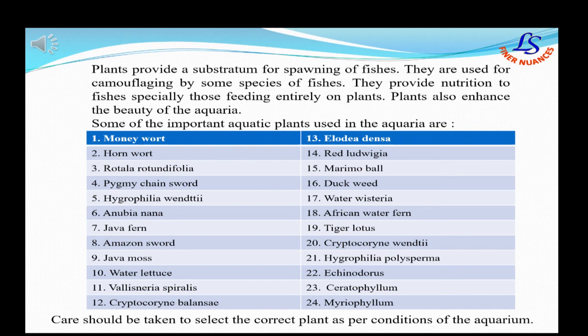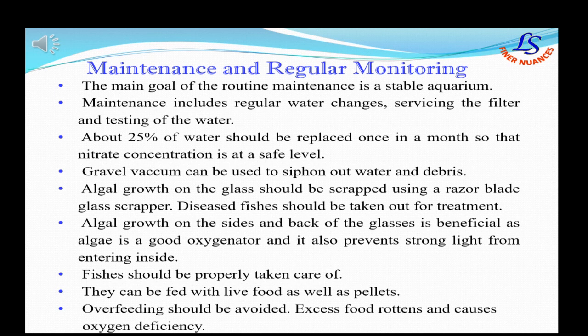Here is a list of some important aquatic plants used. The main goal of routine maintenance is a stable aquarium. Maintenance includes regular water changes — about 25% of water should be replaced once a month. A gravel vacuum can be used to siphon off water and debris. Algal growth on the glass should be scraped off, though algal growth on the sides is beneficial. Fishes should be regularly fed, and overfeeding should be avoided.